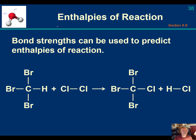We so far have several ways of calculating the delta H of a reaction. One of the ways was Hess's law, another was using enthalpies of formation, and another way is by using what we call bond enthalpies — and that means enthalpies of reaction.